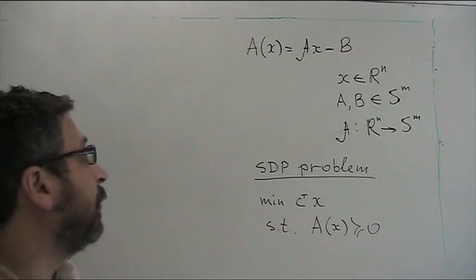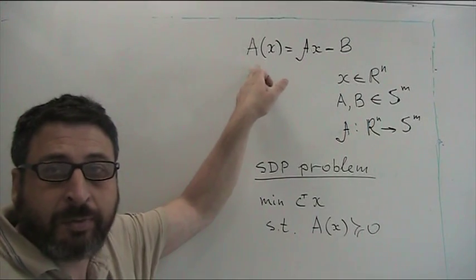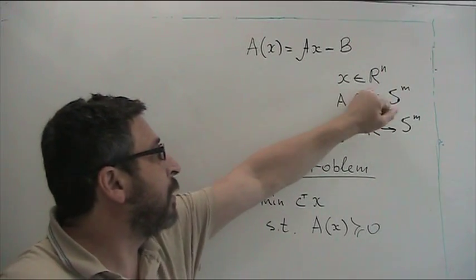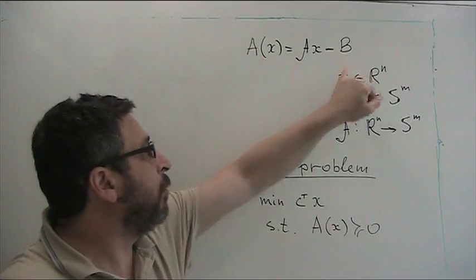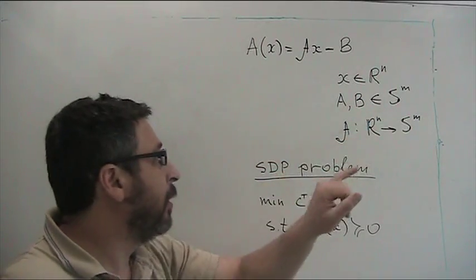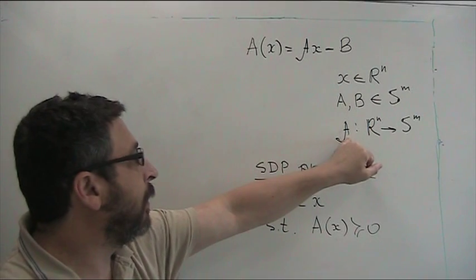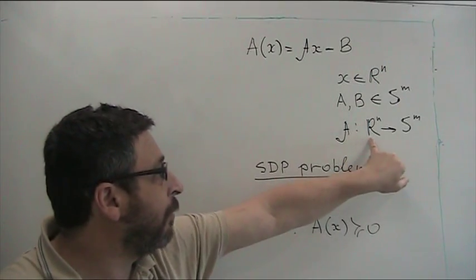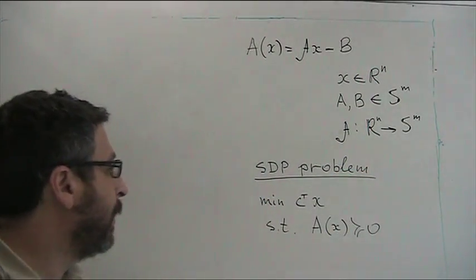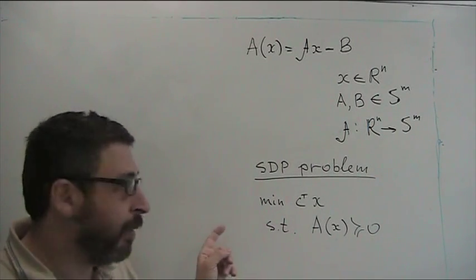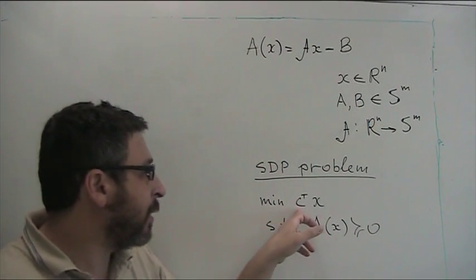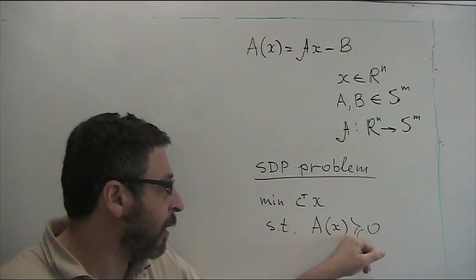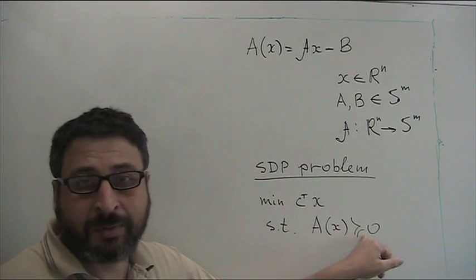Suppose we have a symmetric matrix A which linearly depends on vector x. So x is a vector in R^n, and A and B are symmetric matrices of size m by m. The calligraphic A is a linear map from vectors to matrices. Then the semi-definite problem is to minimize a linear objective function subject to the constraint that A is positive semi-definite.